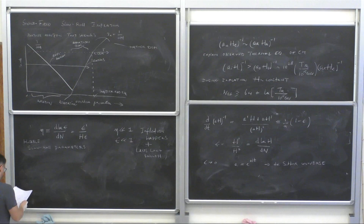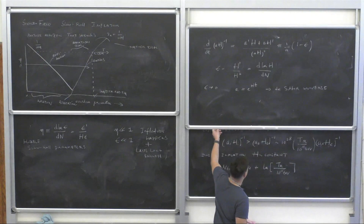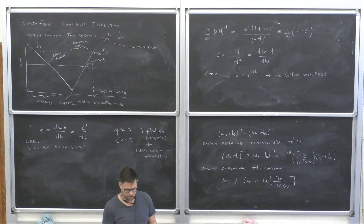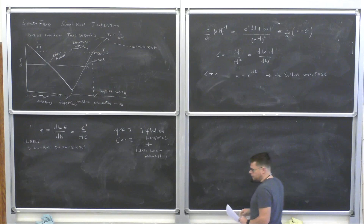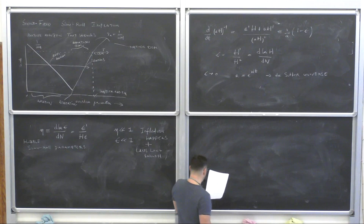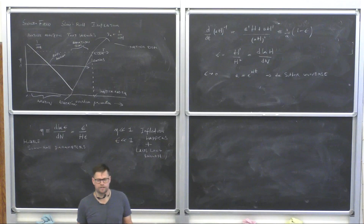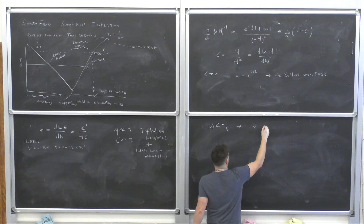The question is what kind of model can produce an inflationary period. Certainly not radiation or matter — they're the source of the conundrums. We need something with an equation of state less than −1/3, and the most natural candidate has w = −1. The people who proposed inflation introduced a scalar field weakly coupled to gravity, with a kinetic term and a potential V(φ) — this is called the inflaton.